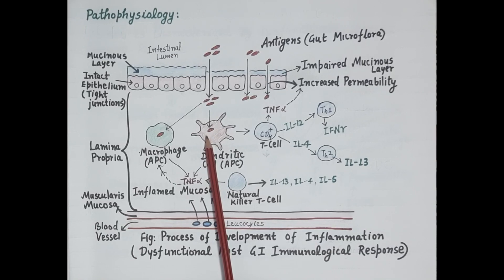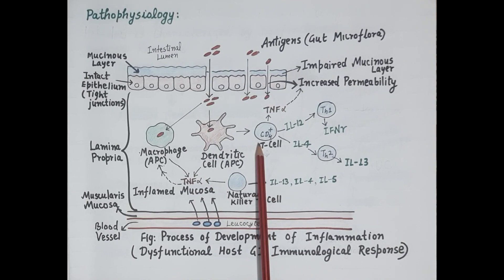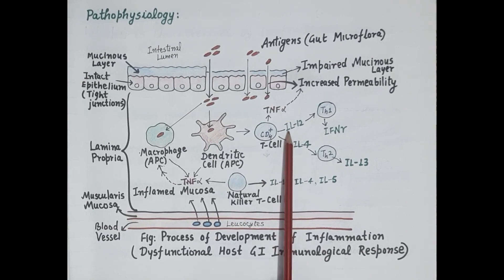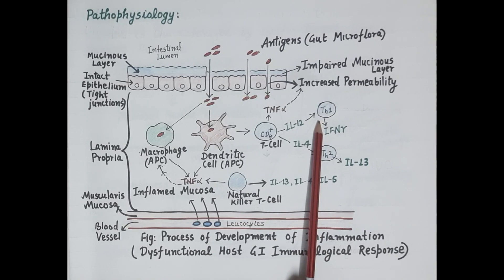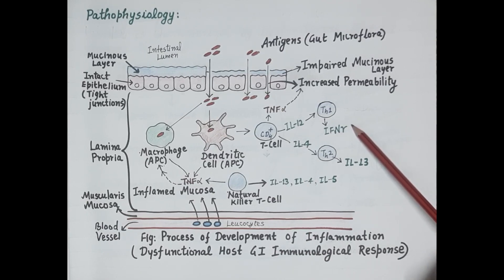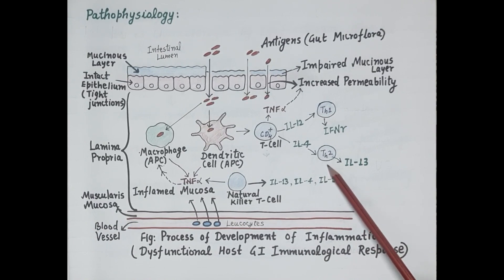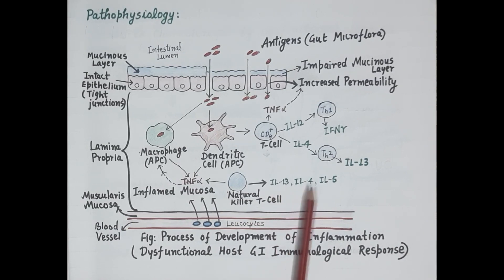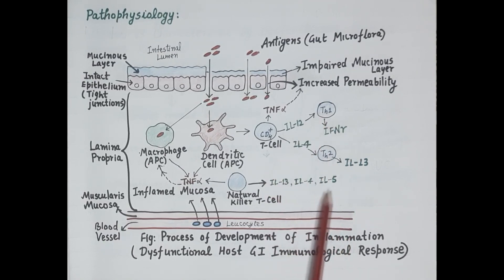These antigens are then presented to CD4+ T-cells, which further produce tumor necrosis factor and pro-inflammatory cytokines — interleukin-12 and interleukin-4. Interleukin-12 further activates T-helper cell 1 and T-helper cell 2. T-helper cell 1 produces interferon-gamma, while T-helper cell 2 produces interleukin-13. Natural killer cells also produce large numbers of cytokines including interleukin-13, interleukin-4, and interleukin-5 — all responsible for producing inflammation in the wall of the rectum and colon.